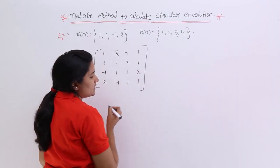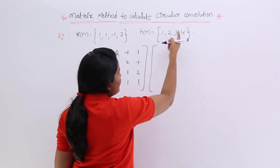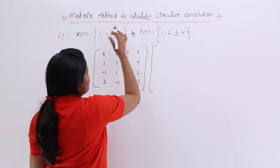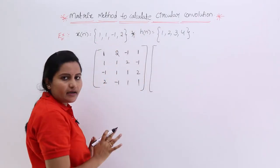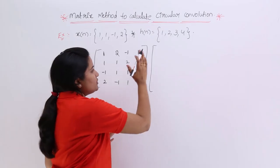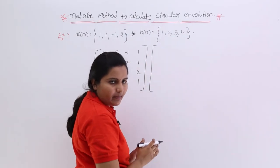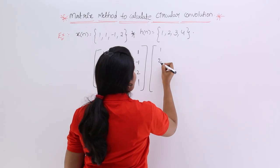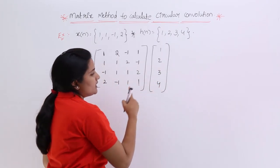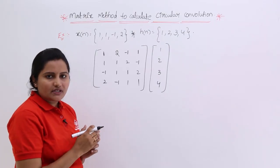After completing the matrix, multiply it with the second signal written as a column vector. The second signal h(n) = {1, 2, 3, 4} is written vertically. Performing this matrix-vector multiplication will directly give the circular convolution result.